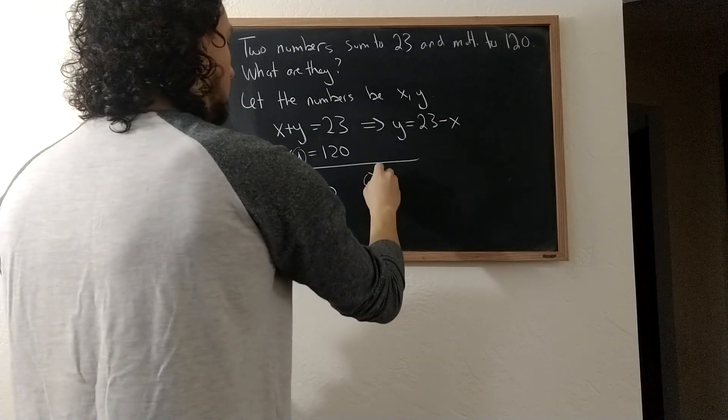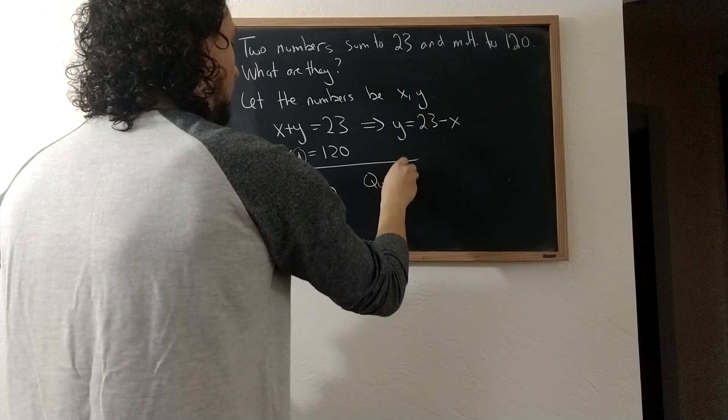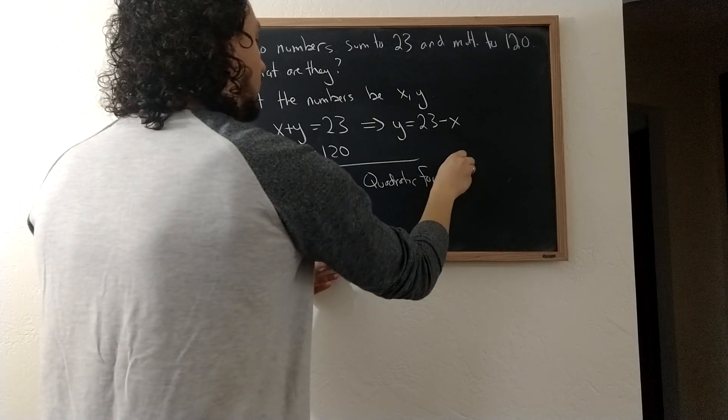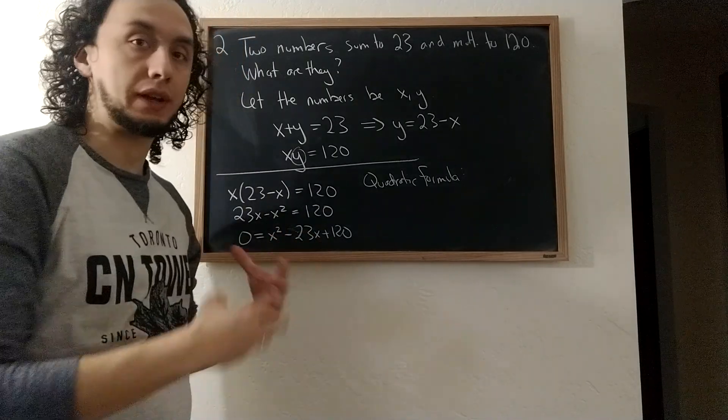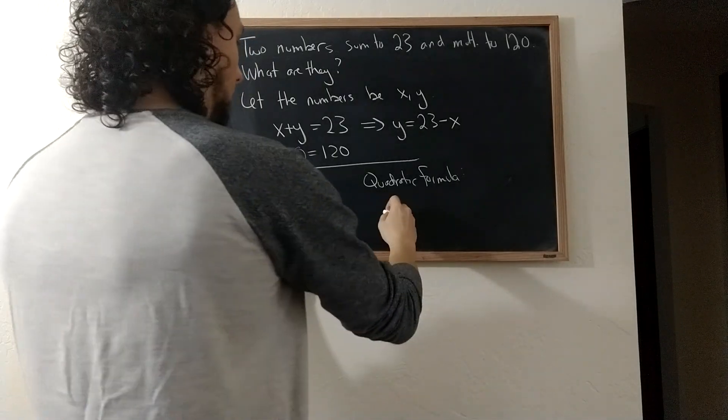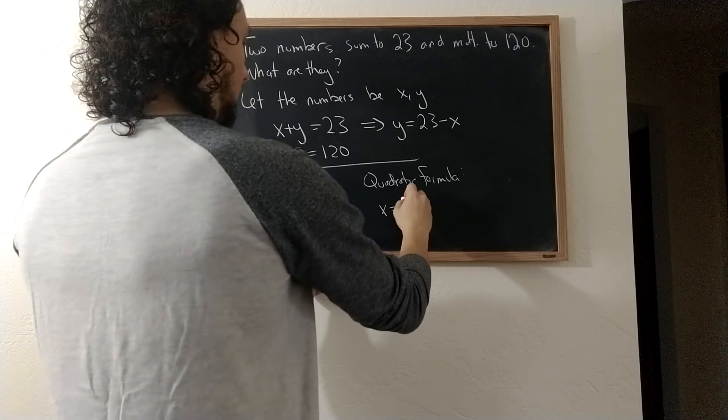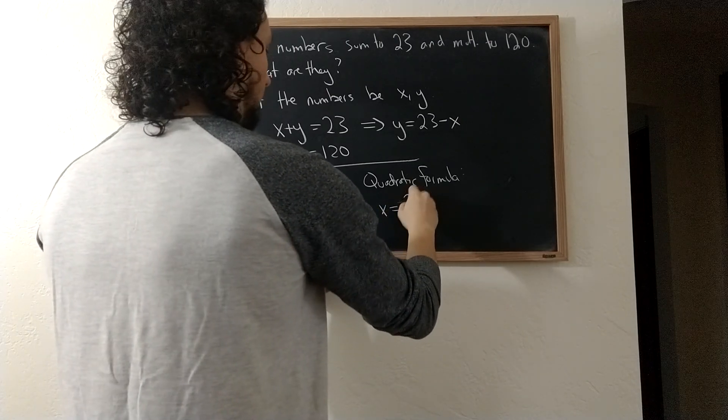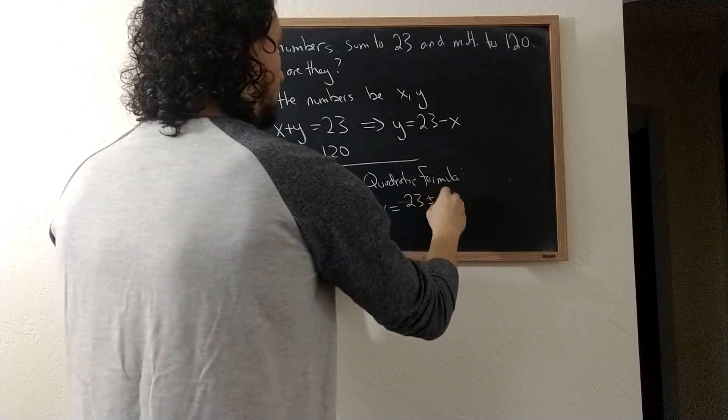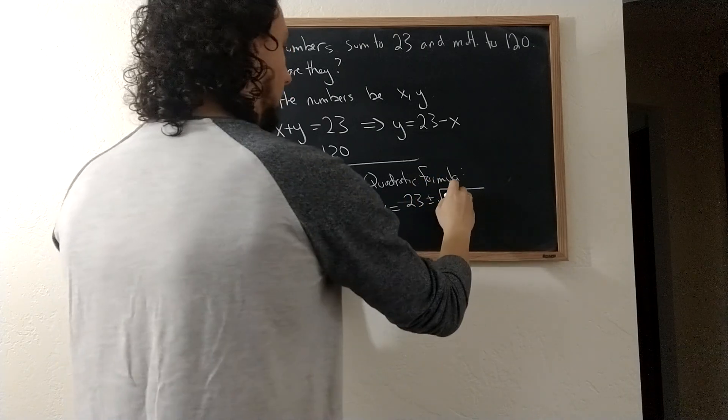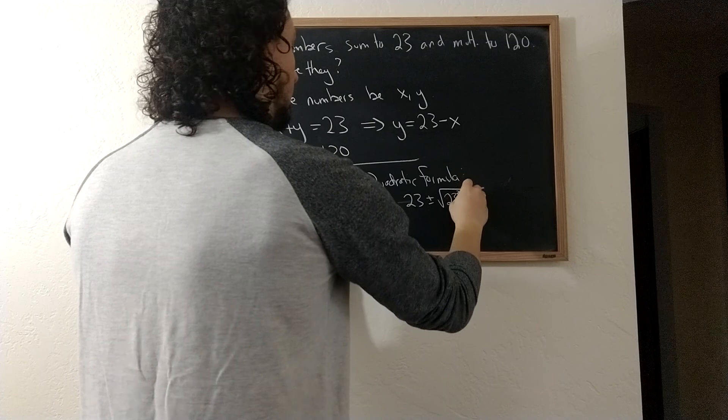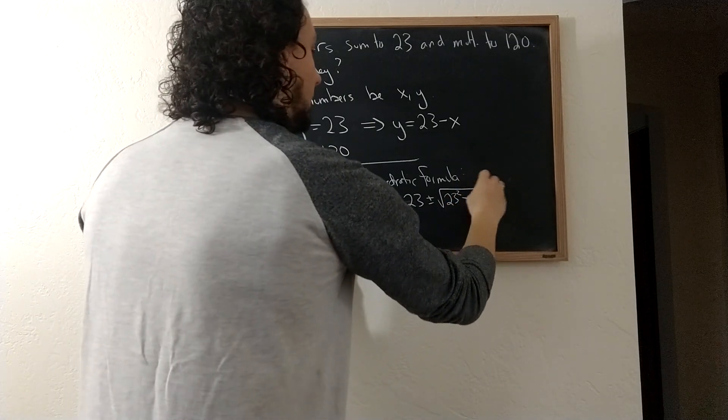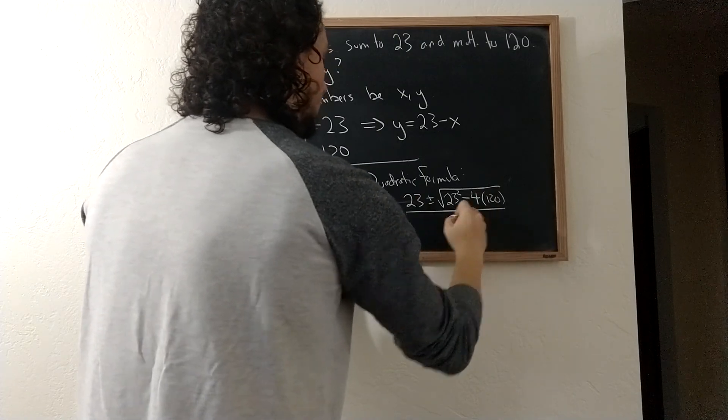And if I use the quadratic formula to solve this equation, which I have covered in another video, what I get is x equals minus b, so negative negative 23, so 23 plus or minus the square root of 23 squared minus 4 times 1 times 120, divided by 2.